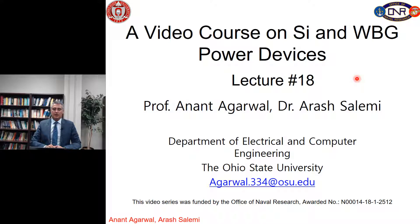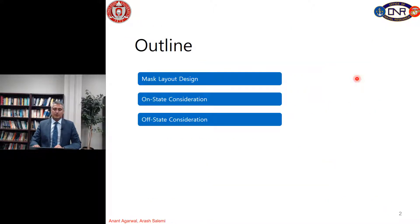In the last lecture I explained how we can process and fabricate the JBS diodes, and I mentioned that we need six masks for this fabrication. In this lecture I'm talking about the design of these six masks. In the outline we have the mask layout design, on-state considerations, and off-state considerations based on these mask layout designs.